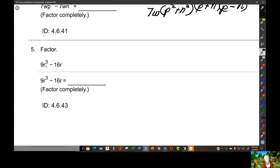On the other hand, you have r times r times r here, and r here. So r is going to be a GCF. You're going to have r times 9r² minus 16.